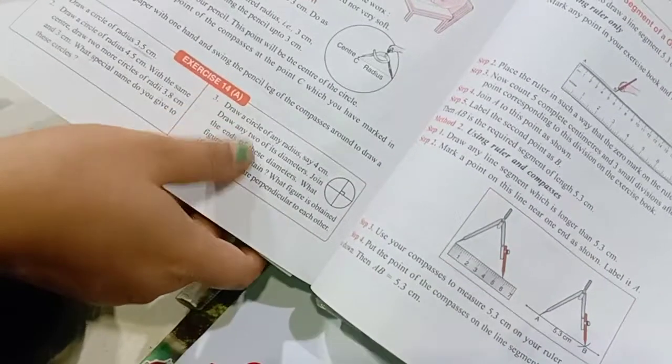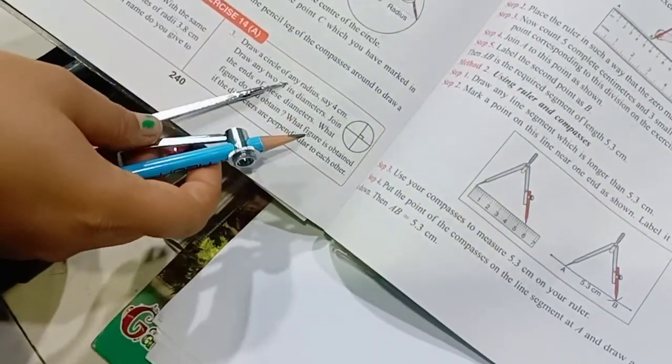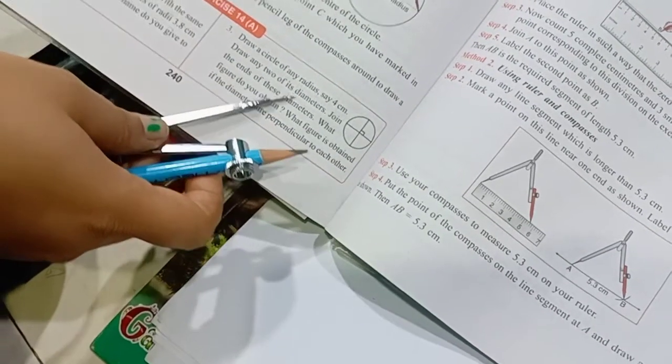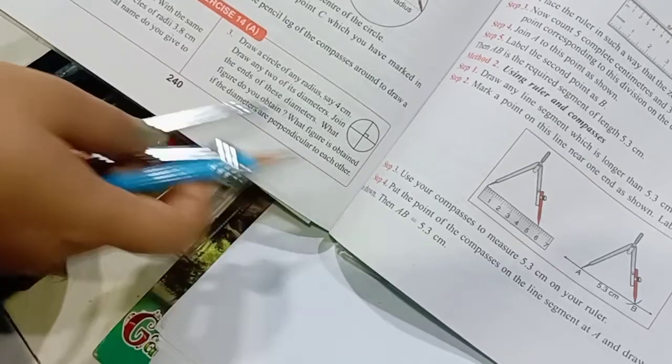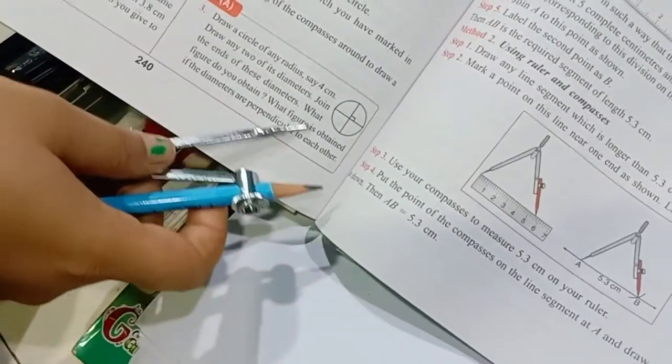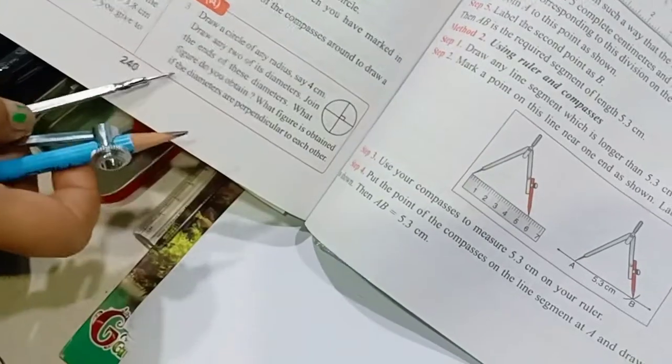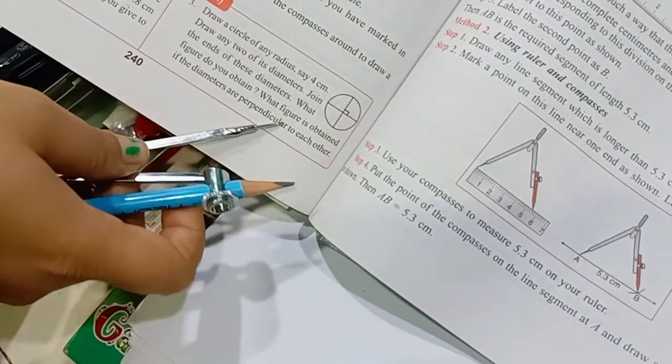Now question number 3. Draw a circle of any radius, say 4 cm. Draw any two of its diameters. Join the ends of these diameters. What figure do you obtain? What figure is obtained if the diameters are perpendicular to each other?